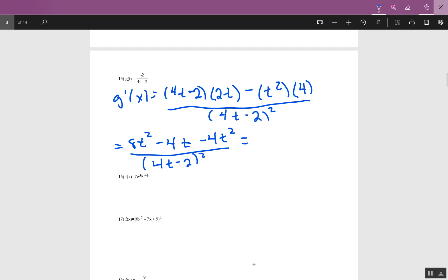Make sure you pay attention to this minus sign. So I have minus 4t squared over 4t minus 2 squared. One more step. I have a negative 4t squared. I have a positive 8t squared, so that can be combined to 4t squared minus 4t over 4t minus 2 squared.